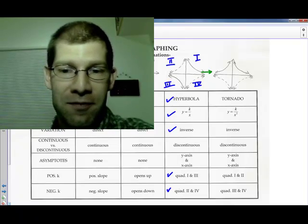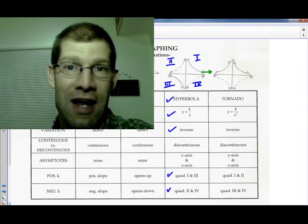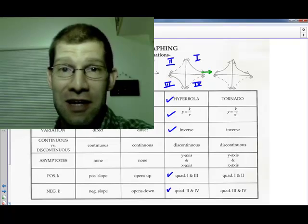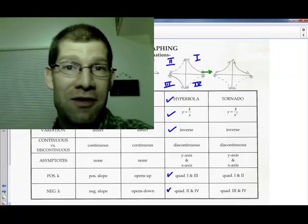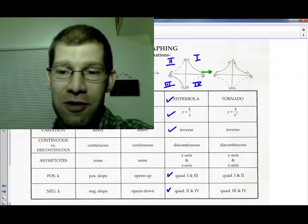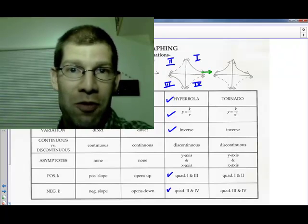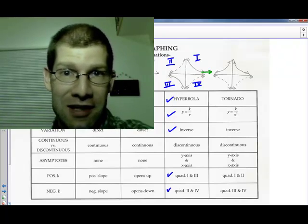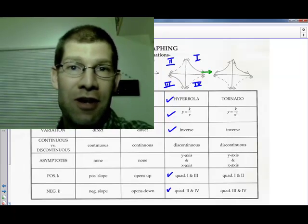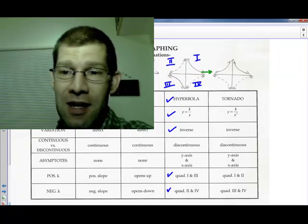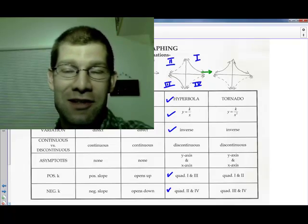It's y equals k over x squared. Still inverse variation because our x is in the denominator of the fraction, and x and y will do opposite things. When x gets larger, y will get smaller and vice versa. Discontinuous because we still can't divide by 0. 0 squared is 0. Asymptotes, same sort of thing. Still can't have a y-intercept, so the y-axis will be an asymptote. No matter what you divide k by, you're never actually going to get down to 0. So this should have an x-asymptote as well. The x-axis is an asymptote.